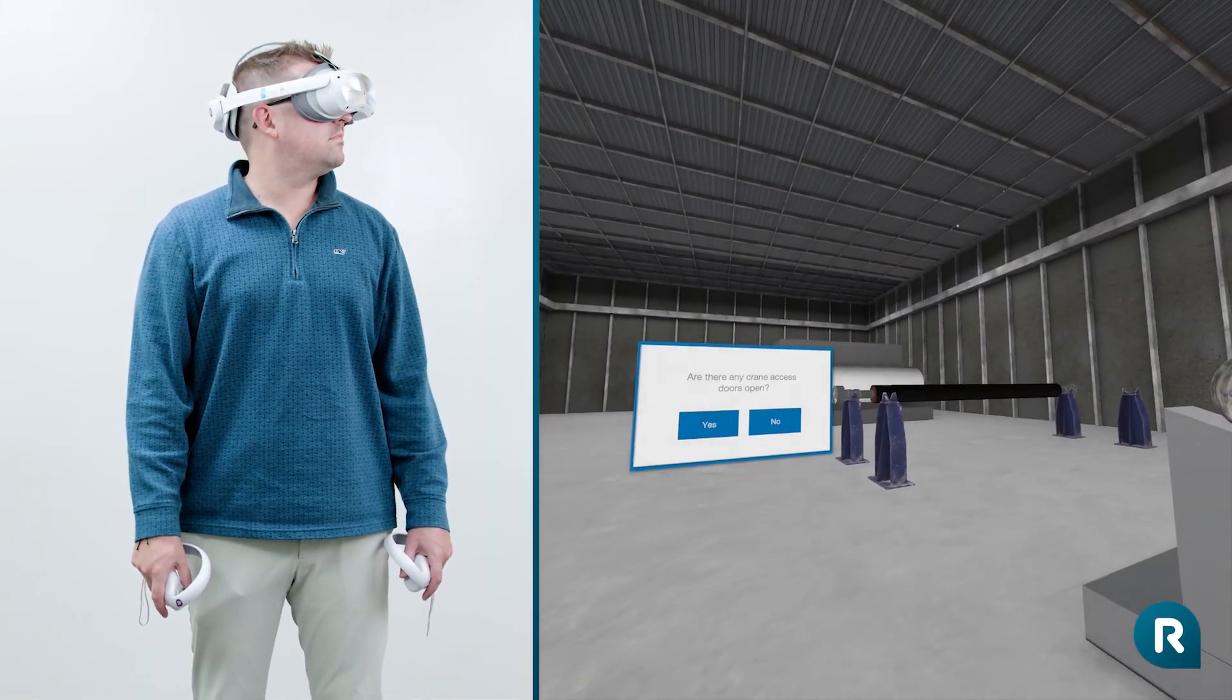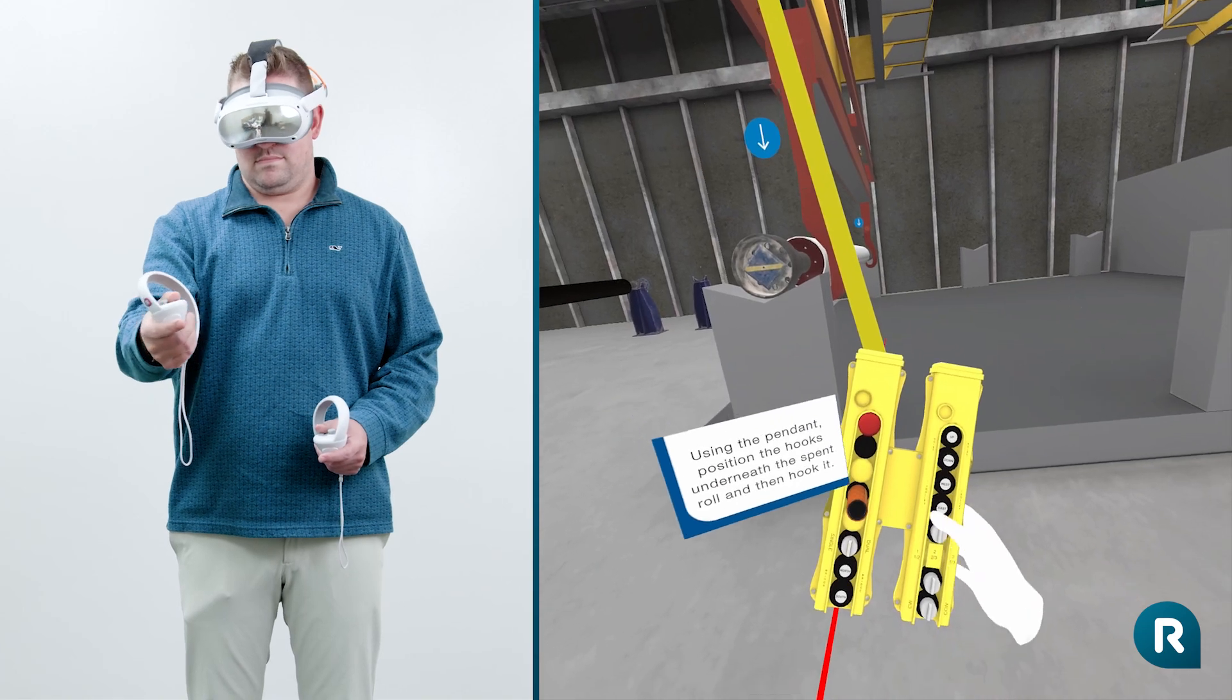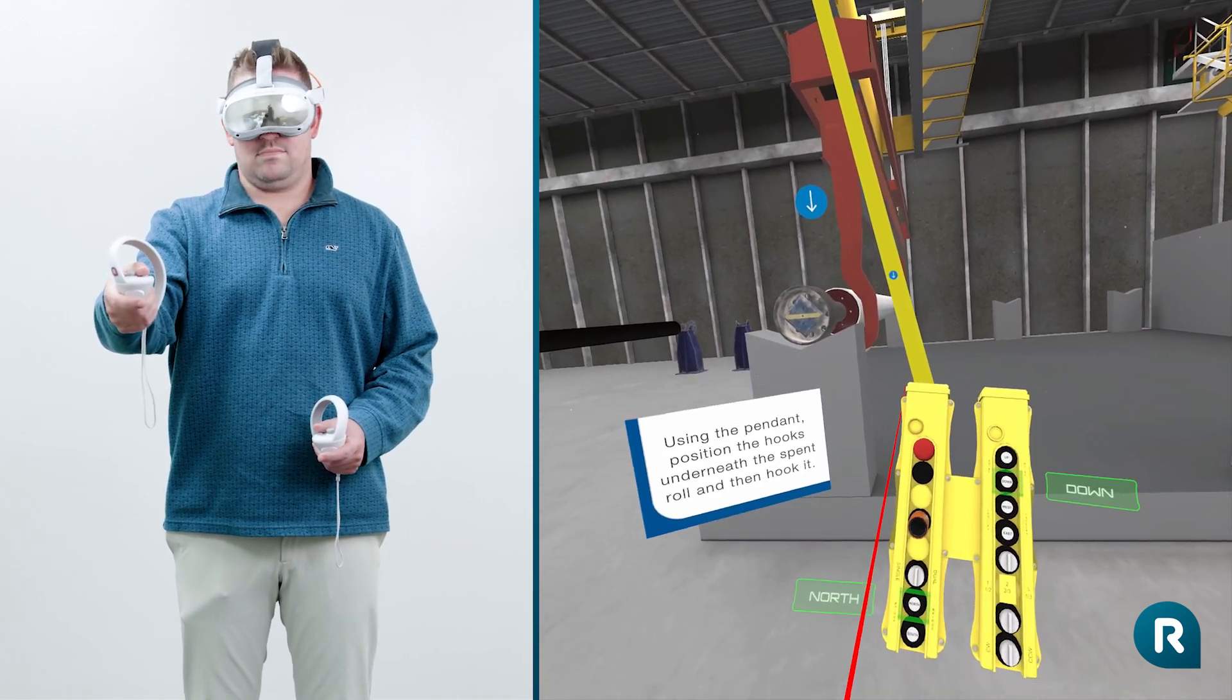Let's start operating the crane. Using the pendant, position the hooks underneath the spent roll on the rewind machine.